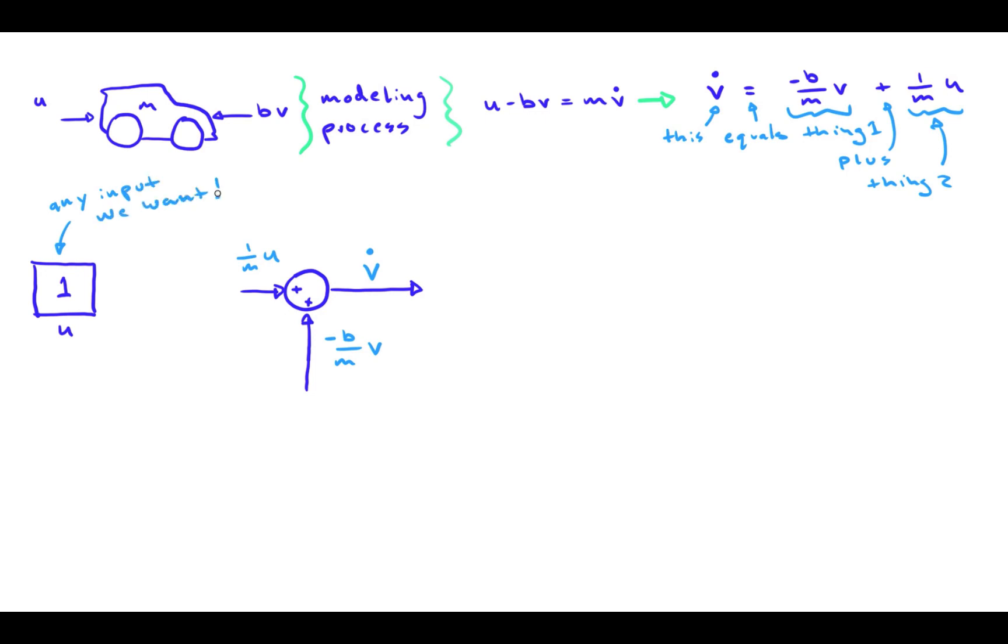Then, to construct the full u times 1/m signal, we need to multiply u by 1/m. Knowing that 1/m is a constant value, we can use a gain block to do inline multiplication. Now this signal does in fact represent 1/m times u.